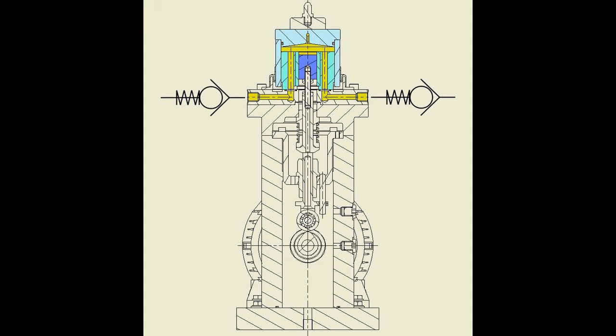On the induction stroke, the small piston draws oil into the actuator through a non-return valve. On the pumping stroke, the piston works against a pressure relief valve.